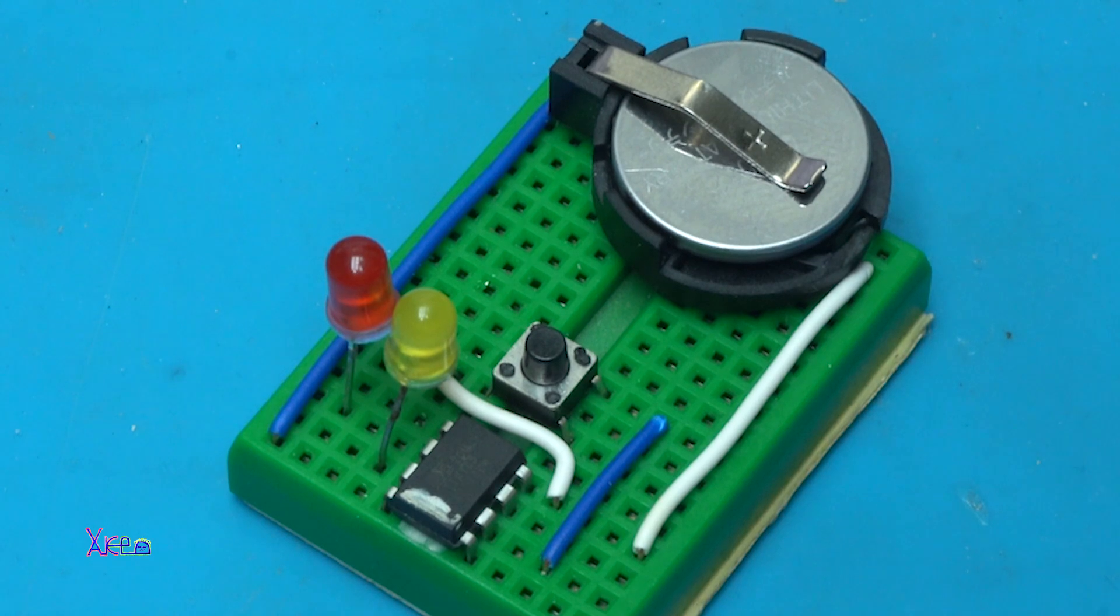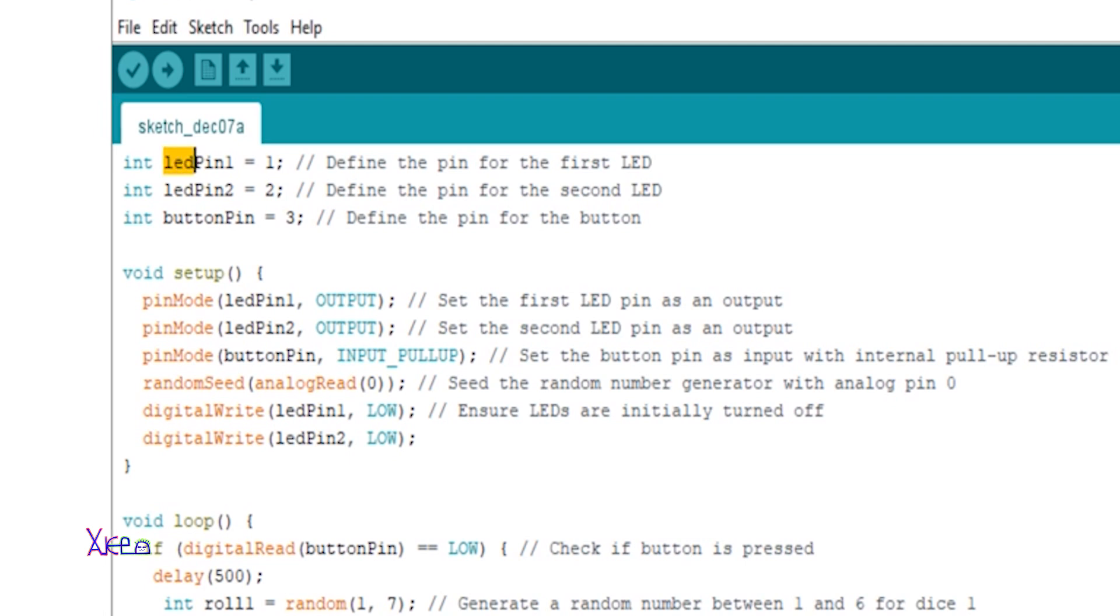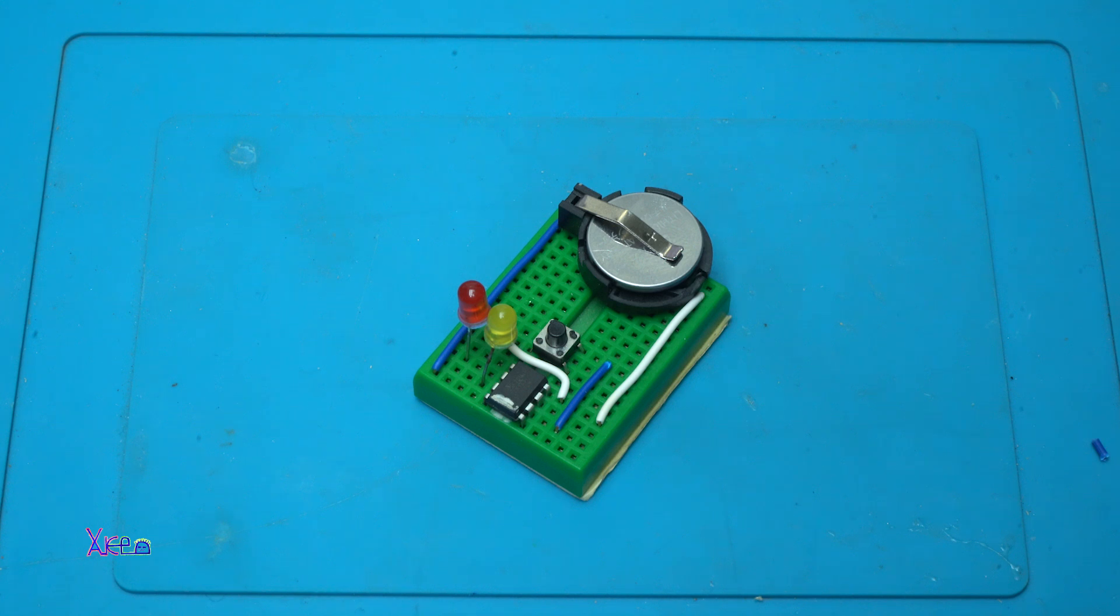If you want to make some changes in the code, the LED pin is digital pin number one of ATtiny85. LED pin number two is on the digital pin number two, and the button pin is connected on digital output number three of ATtiny85. You can change this if you are using another chip, maybe Arduino Uno. But in this case I'm using ATtiny85.